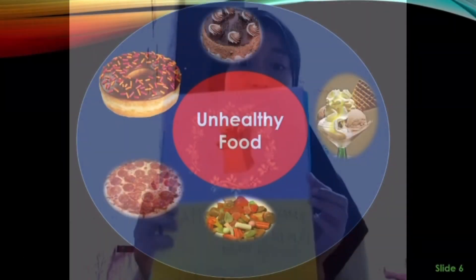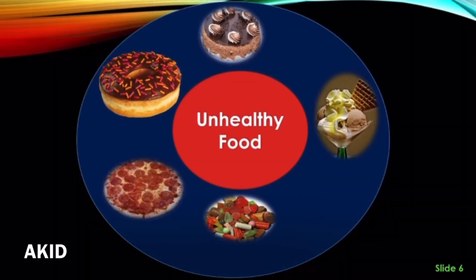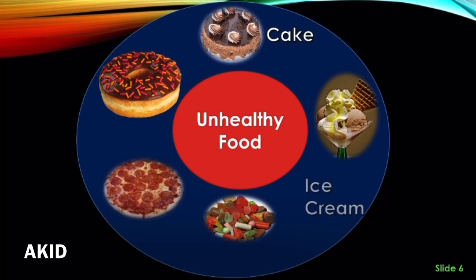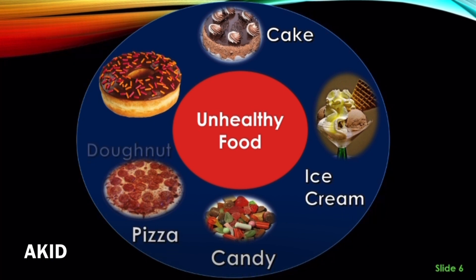This is my scrapbook. Here are some examples of unhealthy food. They are cake, ice cream, candy, and donut. Looks like most of them are sweet.